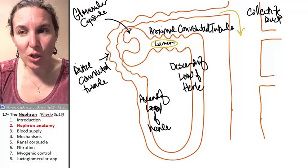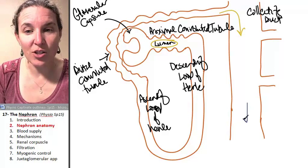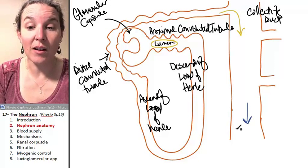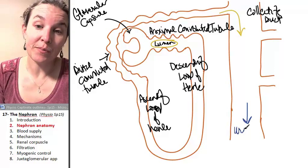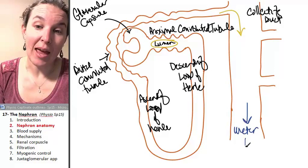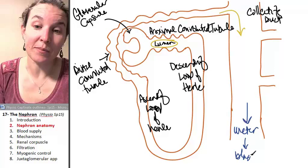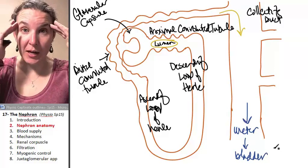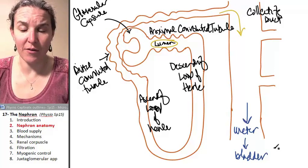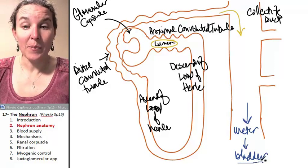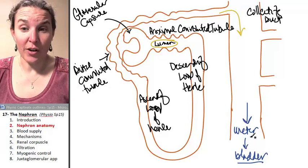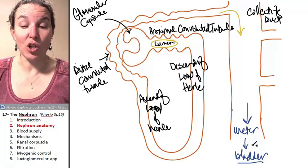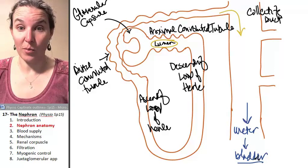Collecting duct ultimately ends up heading to the ureter and the bladder, just for perspective of where all this stuff ends up. And the bladder is where your urine is. The ureter is the tube that connects your kidney to your bladder.